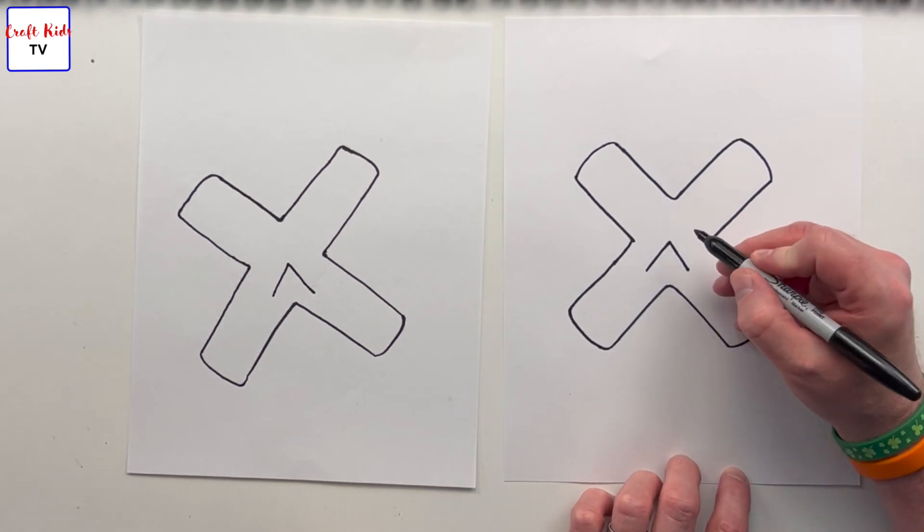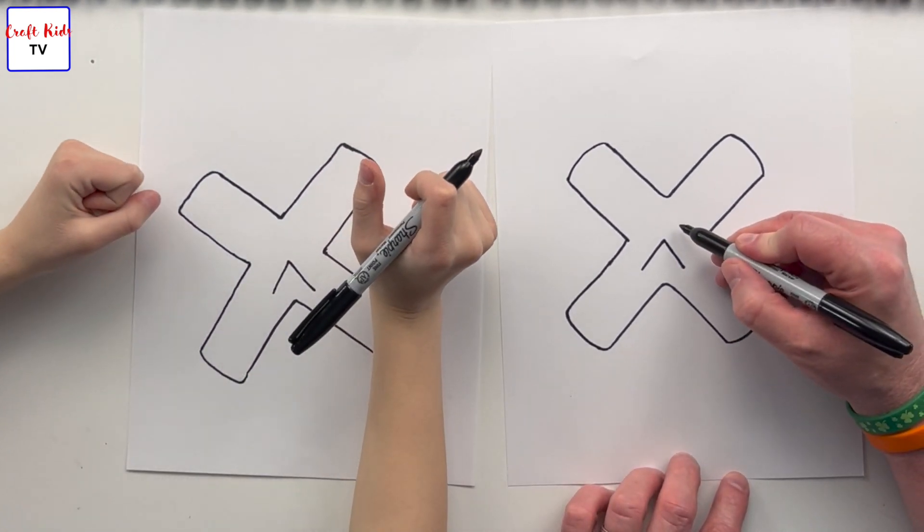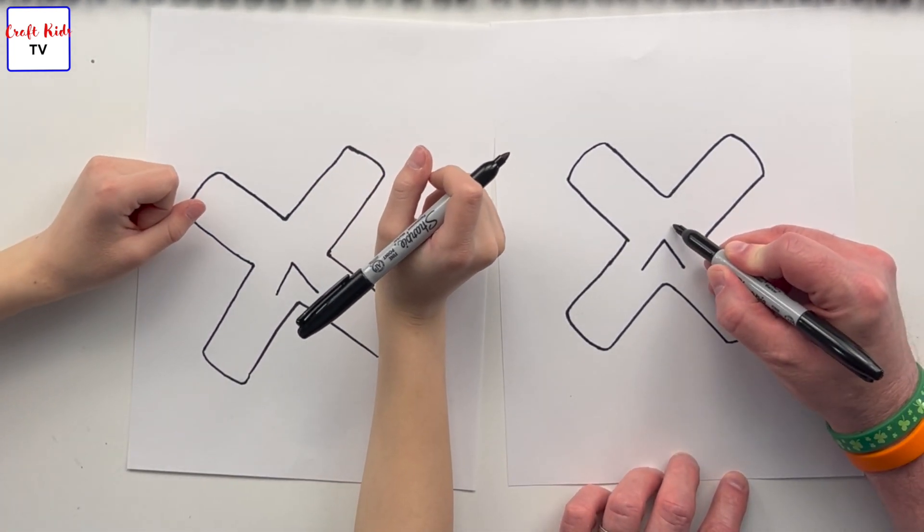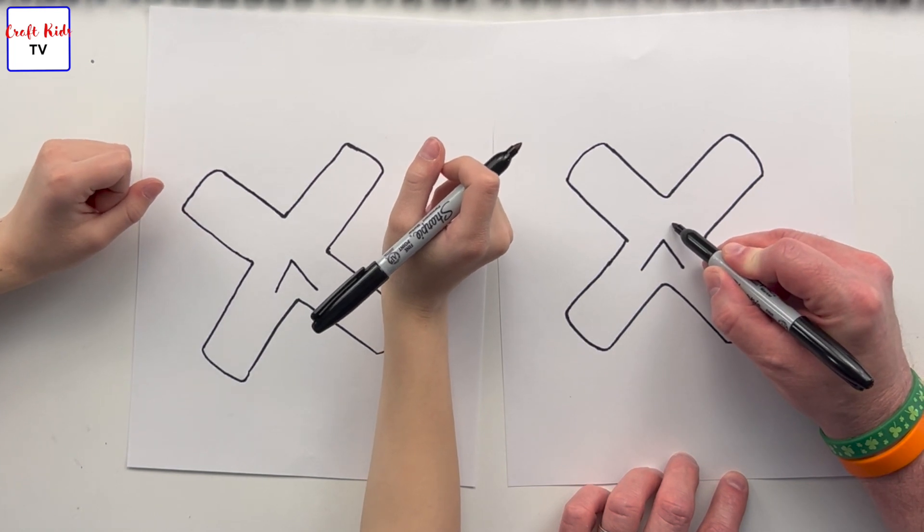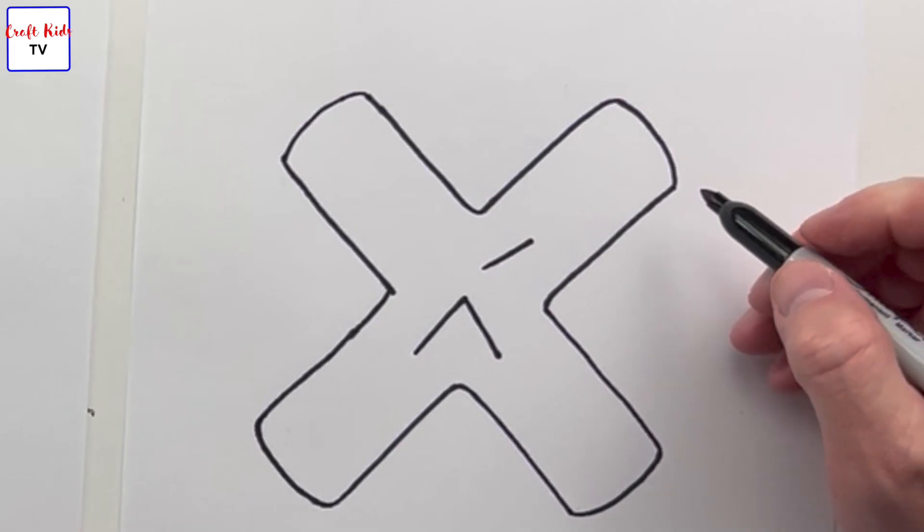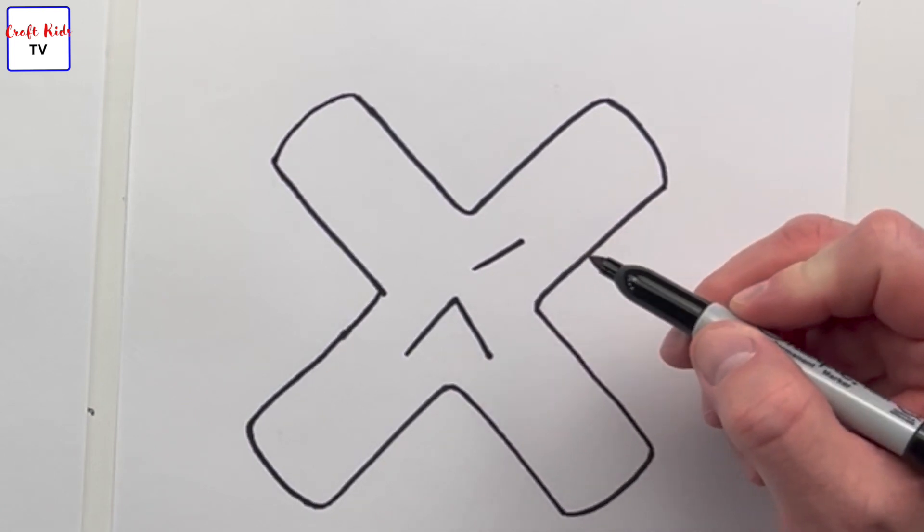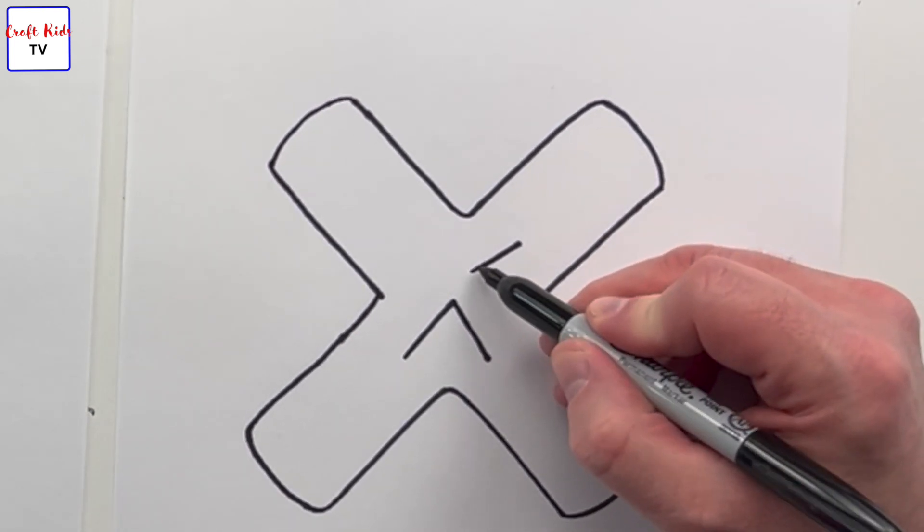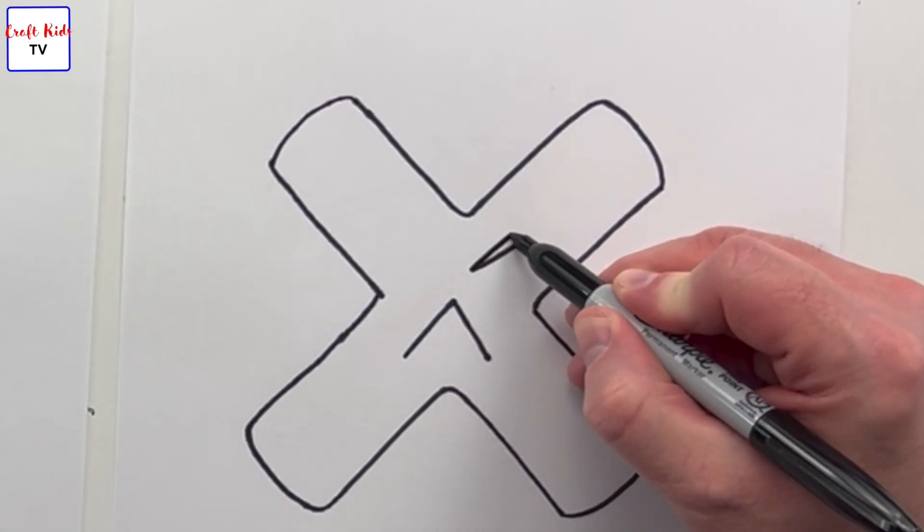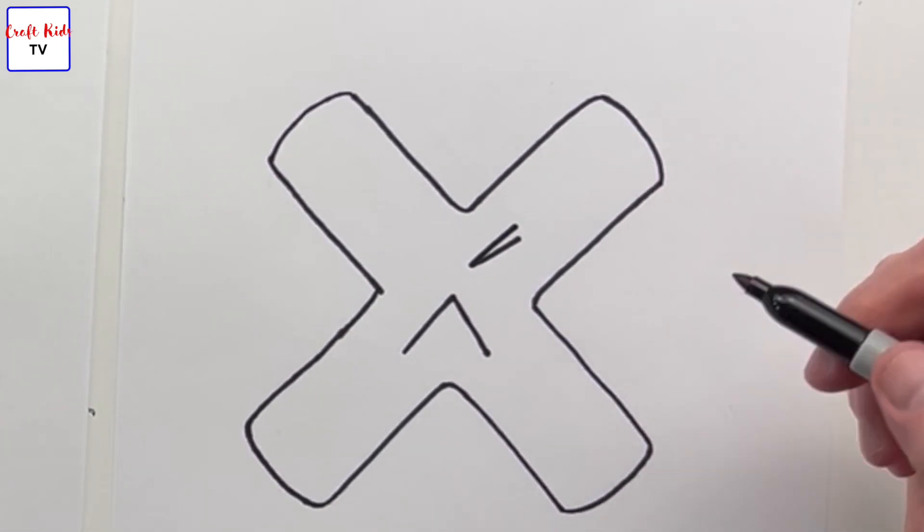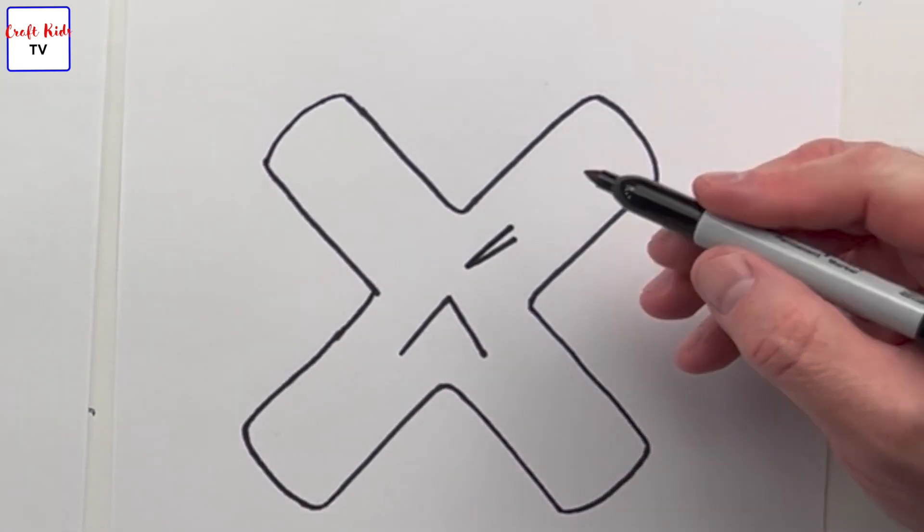Good job. Next we're gonna draw eyebrows - he's got some fierce eyebrows. The eyebrows go like this, they're on a nice slant like that. So I recognize I didn't make my slant tall enough, so before we go any further I'm gonna do a little fix which is to make it taller.